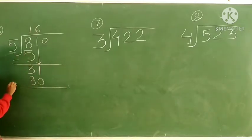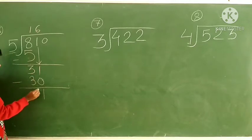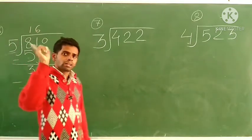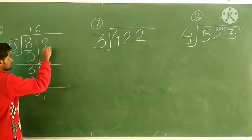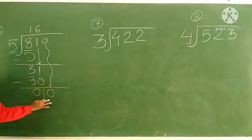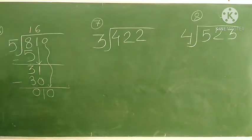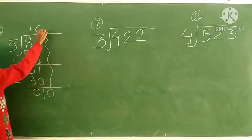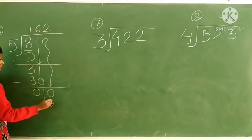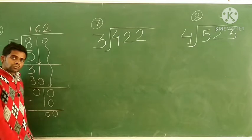Subtract: 1 minus 0 is 1, 3 minus 3 is 0. The remainder is 1. The next digit, 0, comes down to join 1, making 10. Check: is 10 in the table of 5? Yes — 5 ones are 5, 5 twos are 10. 10 minus 10 equals 0. Remainder is 0.